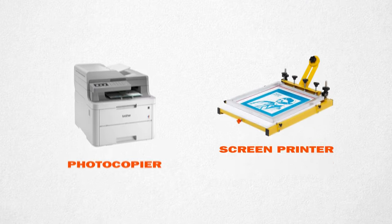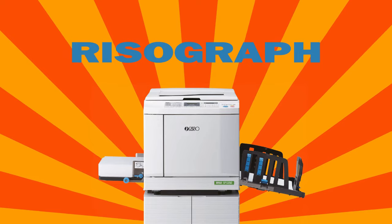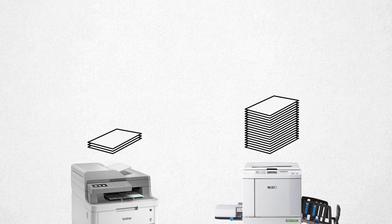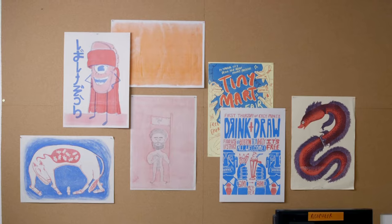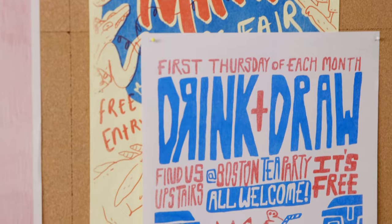The Risograph machine sits somewhere between photocopying and screen printing. A regular photocopier uses powder toner and is great for individual copies. A Risograph works with ink and is best suited for larger runs. The same principles of layering color apply to Risographing as you would expect with any other print process.